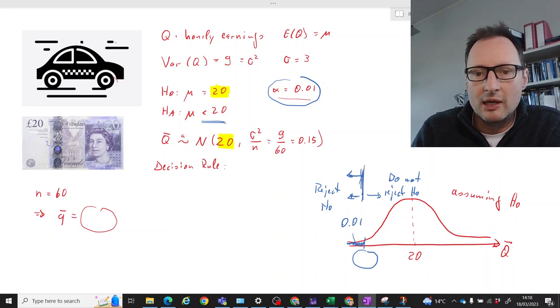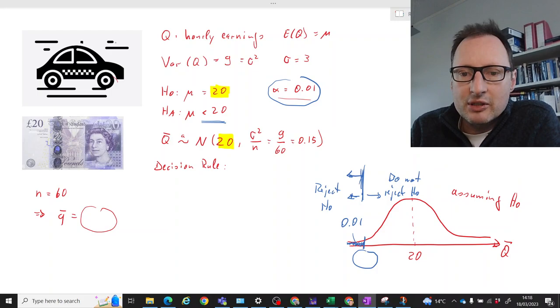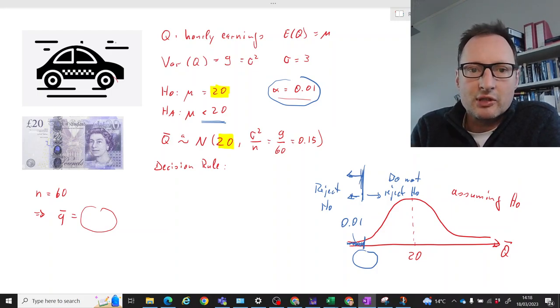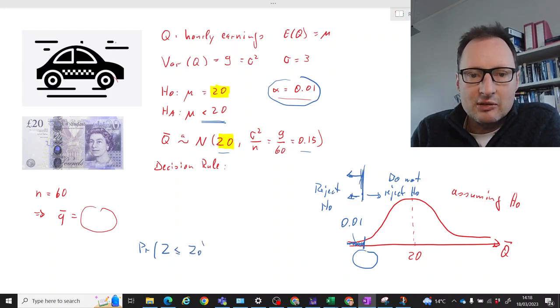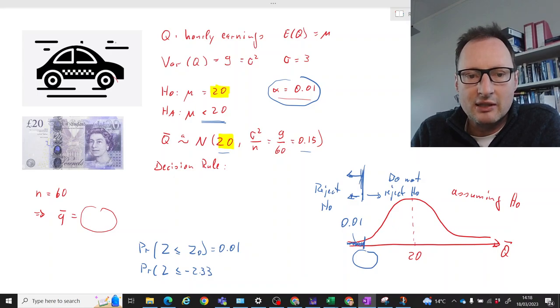Okay so now how do we calculate that? Well what we need to do is figure out which z value gives us a probability that the value beyond that z or smaller than that z is one percent. So if you go to the table you will find that the probability that z is smaller or equal to negative 2.33 is one percent.